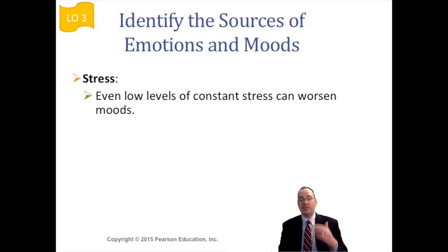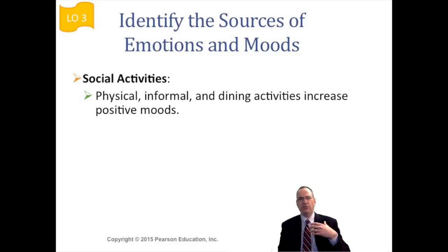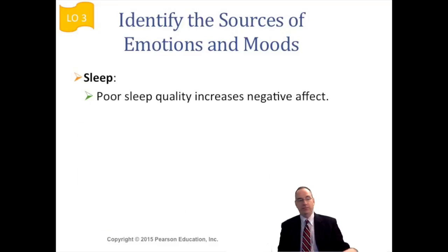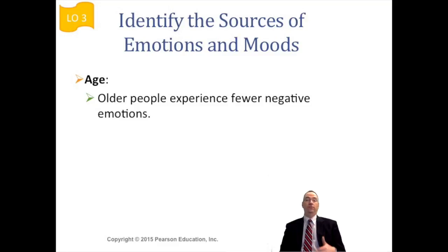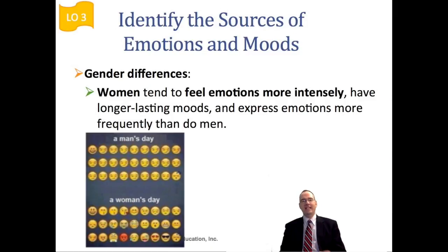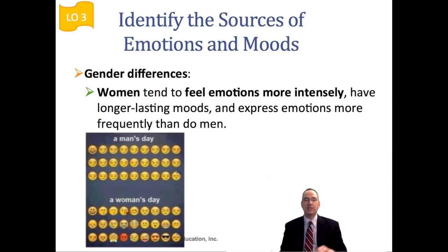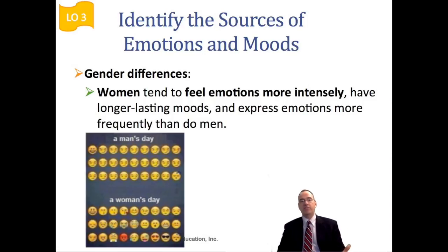Stress obviously has an effect on mood. Social activities matter too — strong connections with others have a positive effect, while lacking those connections has a negative one. Exercise will improve mood. Sleep is important as well; poor sleep — like when you've just had a baby — will negatively impact your mood. Age is a factor: older people tend to feel fewer negative emotions and are more placid. And there are gender differences: women tend to feel emotions more intensely, emotions last longer, and women express emotions more frequently than men — generally speaking, not universally.